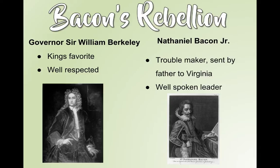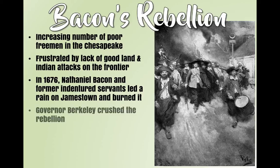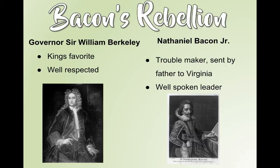Bacon's Rebellion — we're basically jumping back to Jamestown, back to Virginia. You've got Governor Sir William Berkeley, appointed by the King. Berkeley is the King's favorite, pretty well respected, but a little sneaky. He makes a lot of money from the fur trade with the Native Americans, so his goal is to keep friendly relations with the Native Americans.